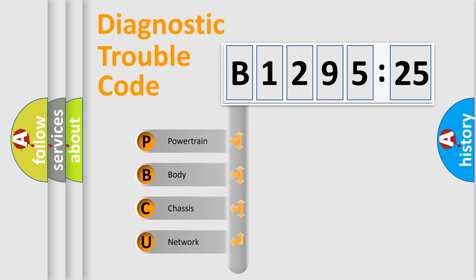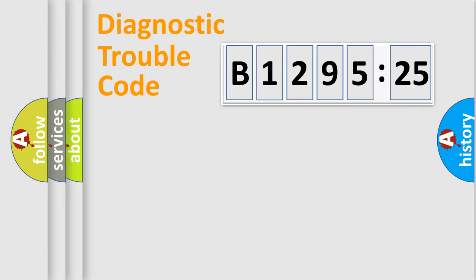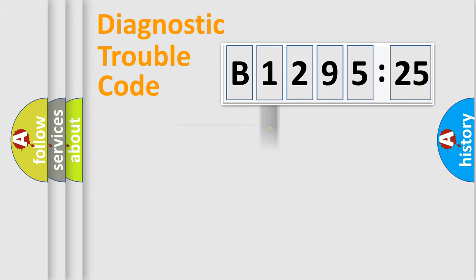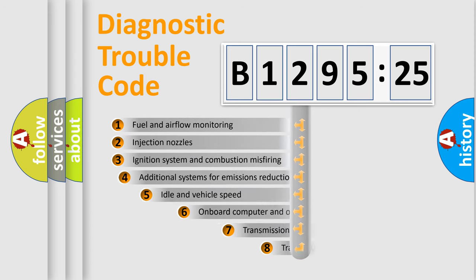If the second character is expressed as zero, it is a standardized error. In the case of numbers 1, 2, or 3 it is a manufacturer-specific error. The third character specifies a subset of errors. The distribution shown is valid only for the standardized DTC code. Only the last two characters define the specific fault of the group.